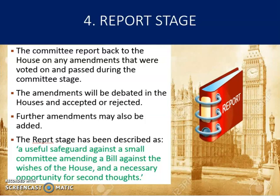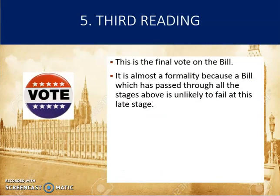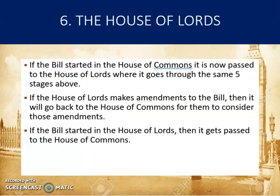Once committee stage is finished, the bill returns to the floor of the House of Commons for its report stage, where the amended bill can be debated and further amendments proposed. The committee reports back to the house on any amendments voted on and passed during committee stage. These amendments are debated and either accepted or rejected, and further amendments can also be added at this stage. After report stage, the bill is reprinted to include all agreed amendments and moves on to third reading — a further chance to discuss the bill as it nears conclusion. Third reading is the final vote on the bill and is almost a formality, since a bill which has passed through all the previous stages is unlikely to fail. The bill is then passed to the House of Lords, which goes through the same five stages again, and if the Lords make amendments, the bill goes back to the Commons — a process sometimes called 'ping pong' between the two houses.